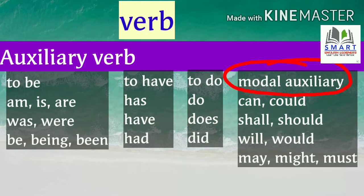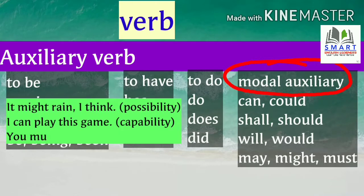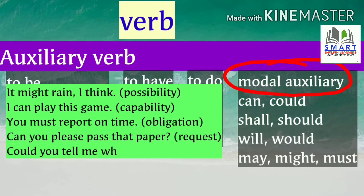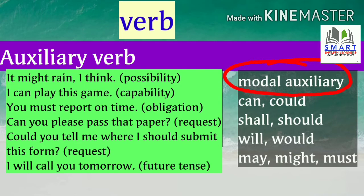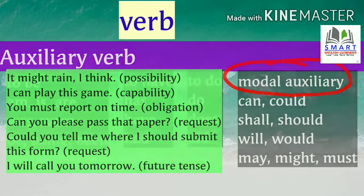Modal auxiliary verbs are used to indicate possibility, capability, obligation, request, or to form a future tense. For example: 'it might rain, I think' — possibility; 'I can play this game' — capability; 'you must report on time' — obligation; 'can you please pass that paper?' and 'could you tell me where I should submit this form?' — request; 'I will call you tomorrow' — future tense.